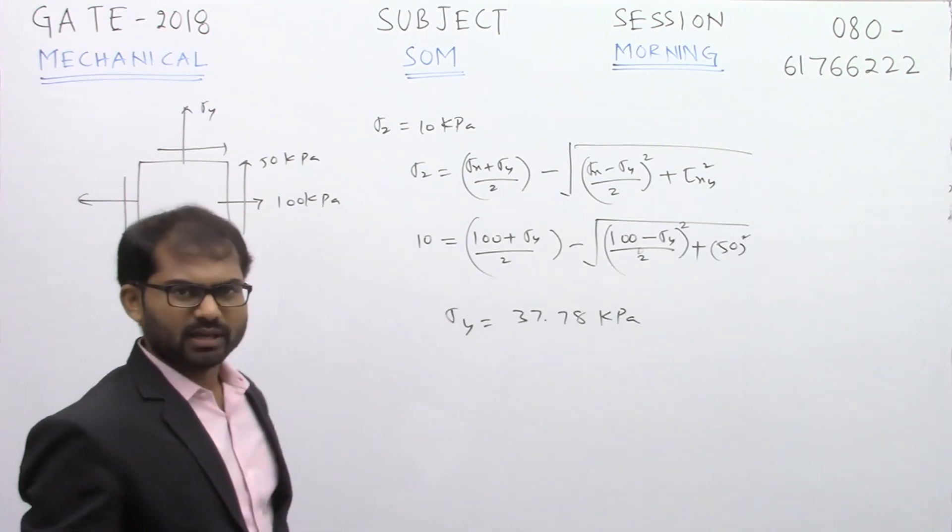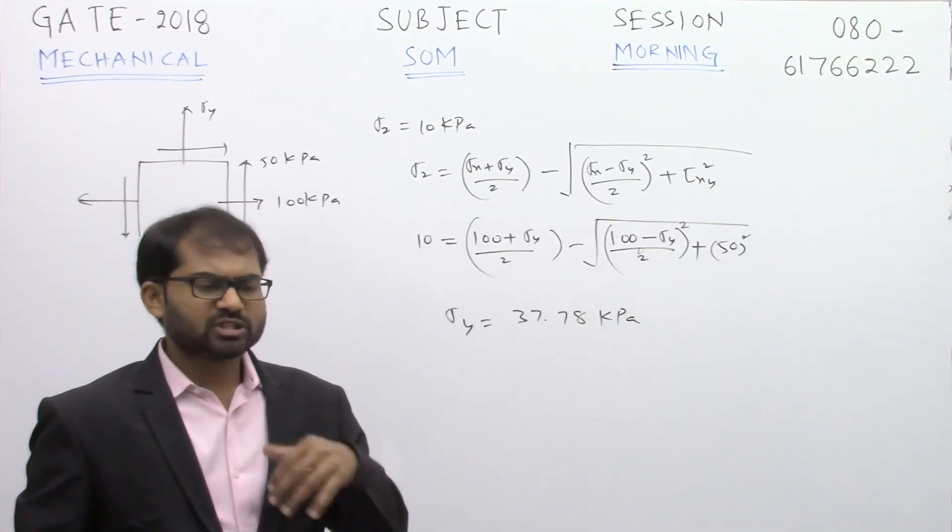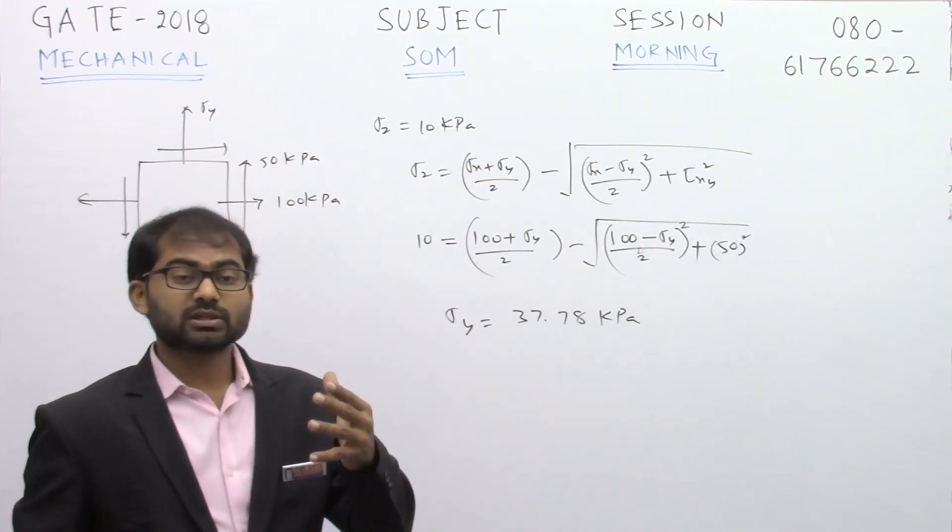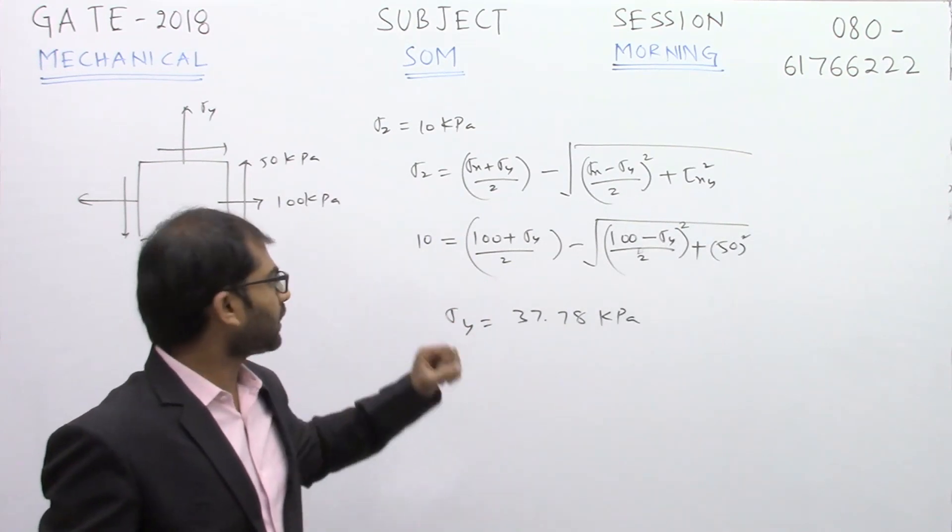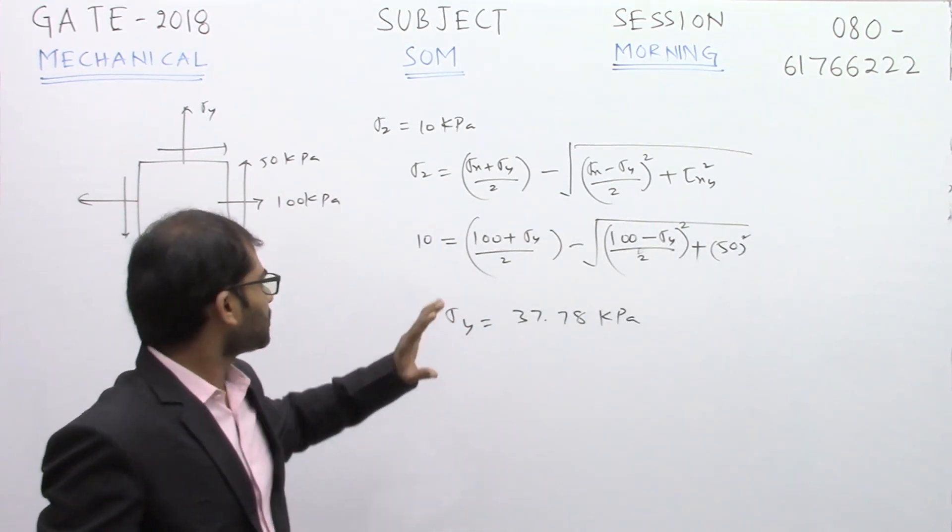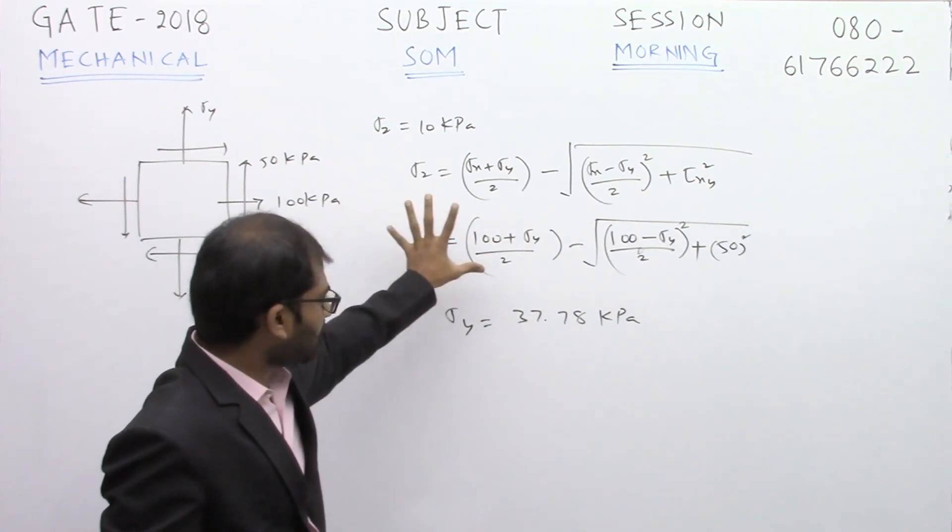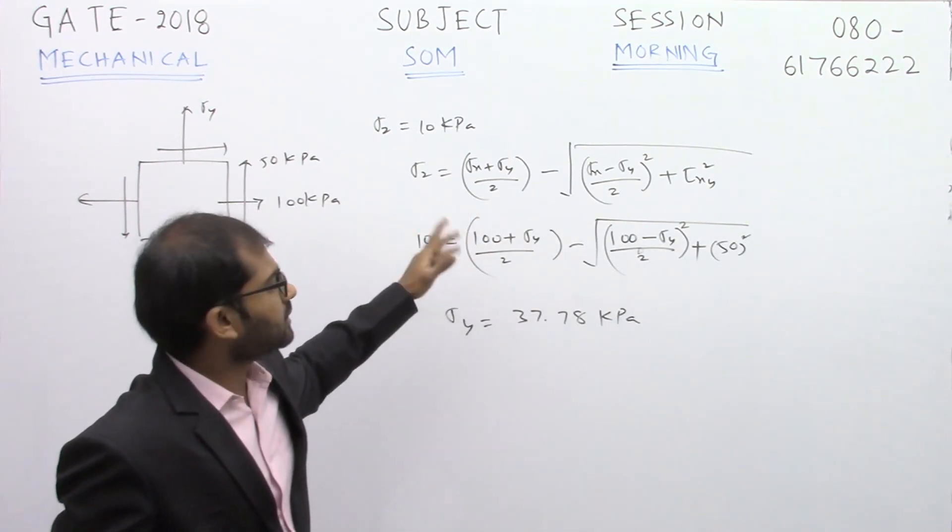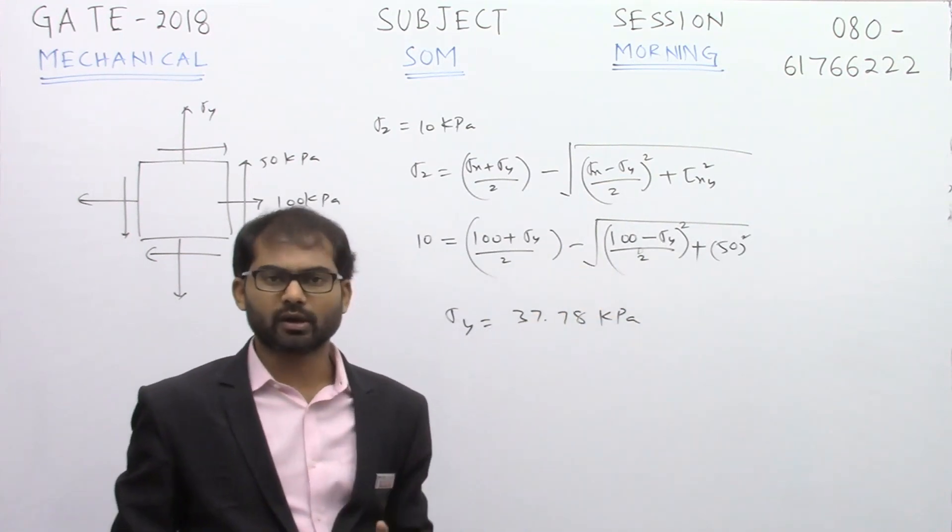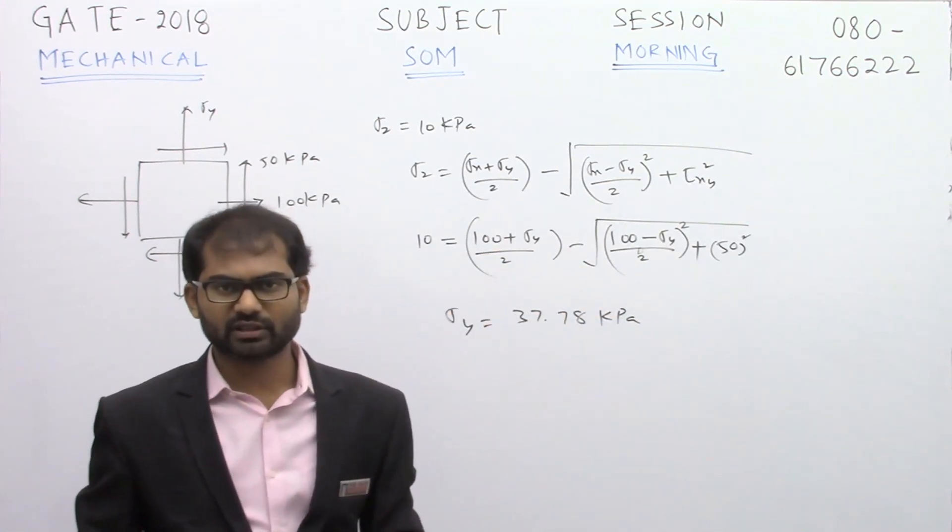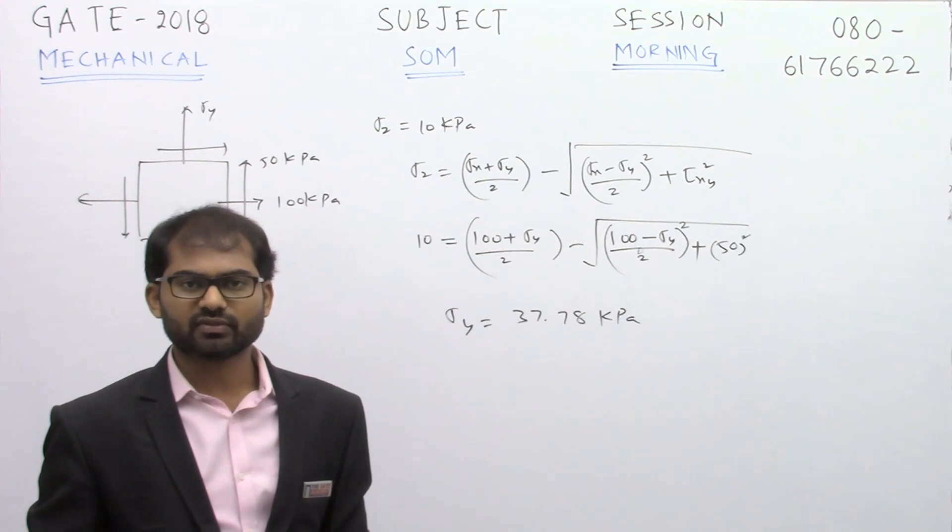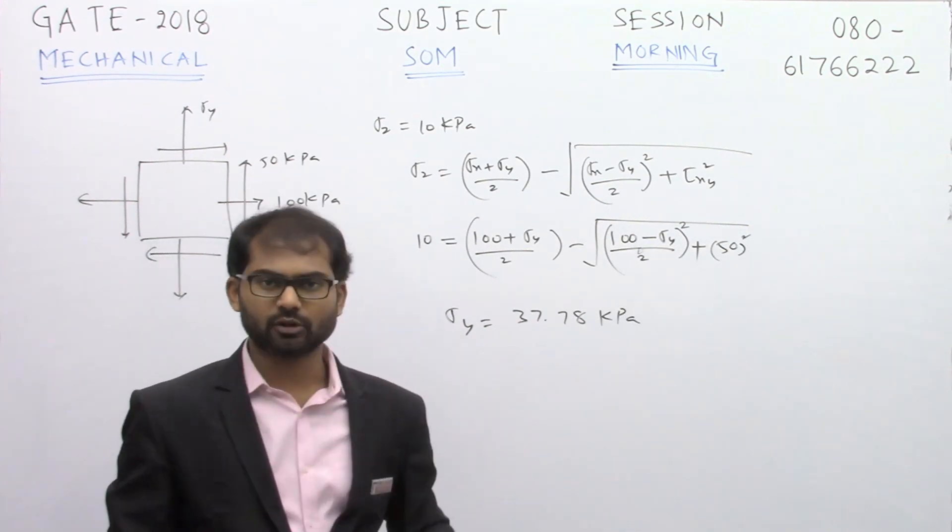You have to do the calculation here. This question, most of the people lost the marks only because of doing wrong calculations. If you are good in mathematics, you can do it very easily here. Simply take out this thing to the left side here, do the mathematical addition there, then square on both sides. This particular square root will be going off. Ultimately, we will be left with evaluating the value of sigma y as 37.78 kilopascal.